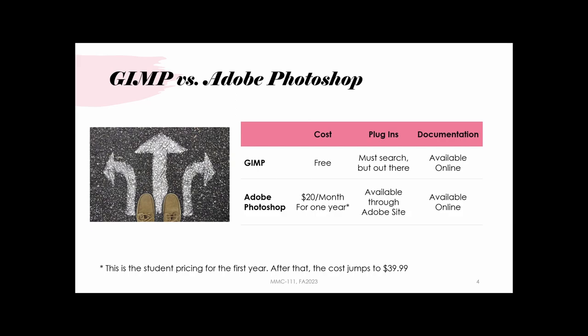GIMP is completely free and does update, though not on a yearly cycle like Photoshop — GIMP tends to release smaller changes faster. Adobe, on the other hand, delivers major version updates once a year. For students, Adobe offers $20 a month for the first year, but after that it goes up to the standard cost of about $40 a month. Adobe will also keep auto-charging your credit card, so it's easy to forget about the charge.